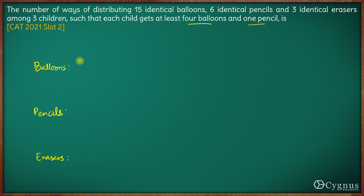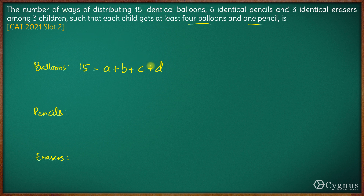How many balloons do we have? We have a total of 15 balloons. This has to be distributed amongst 3 children. So let us say each child gets A, B and C balloons. So 15 is equal to A plus B plus C.